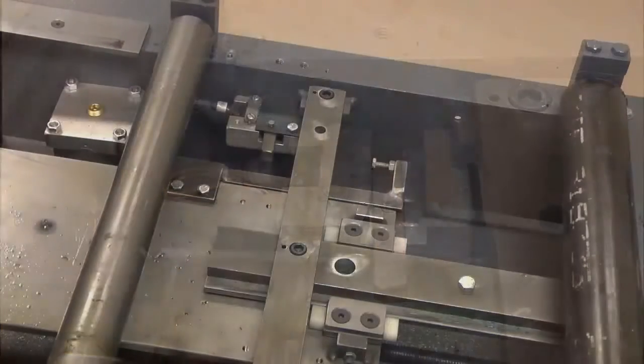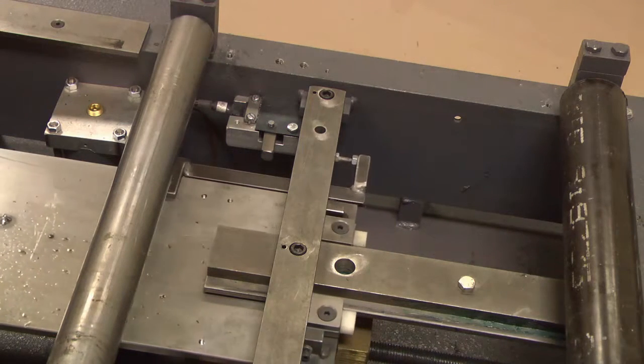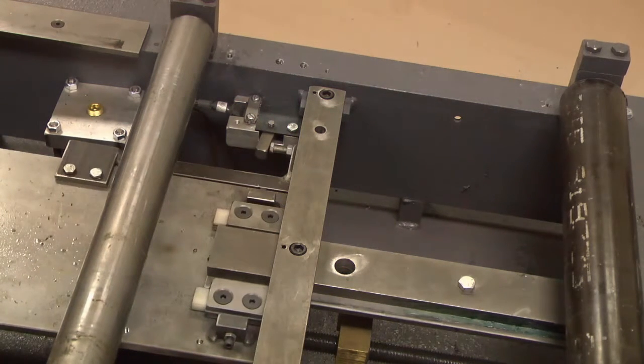The feed forward switch transmits information back to the control that the bar feed or shuttle has reached the most forward position. This communicates that the shuttle feed is completely forward and the material is in position and ready to be cut.